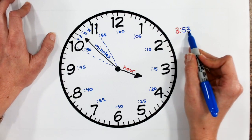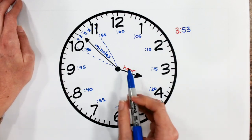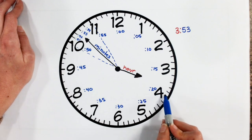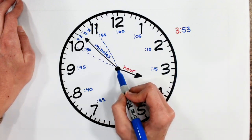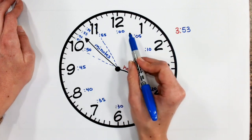And if I want to look at this a little deeper, remember, that's why my hour hand is almost to 4 because 3:53 is really close to 4 o'clock.